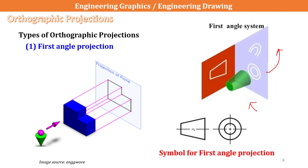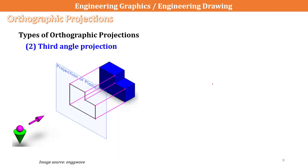This is the symbol for representing first angle projection. We are seeing from this side, and this view falls here; seeing from the side, this view falls here. If we fold this, we get the side-by-side arrangement — that is why we represent it as first angle projection.